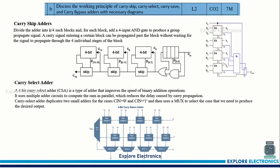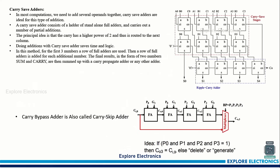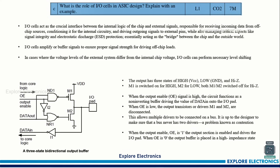The next question: discuss the working principle of carry skip, carry select, carry save, and carry bypass adders. It is for seven marks and four adders are asked, with each adder carrying two to three marks. Sufficient expansion and relevant diagrams are given — you can refer to these for carry skip, carry select, carry save, and carry bypass adders.